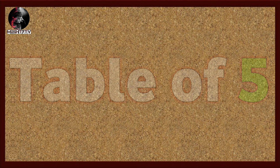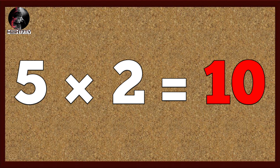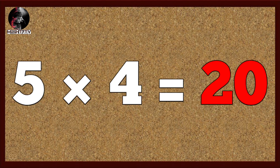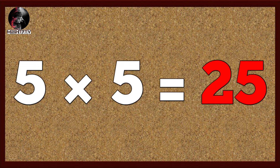Table of five. Five one's are five, five two's are ten, five three's are fifteen, five four's are twenty, five five's are twenty-five.